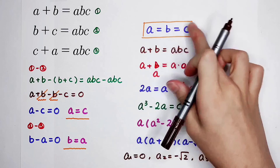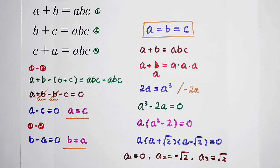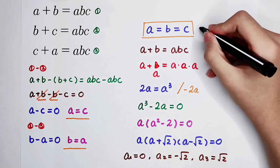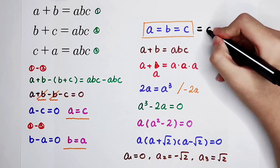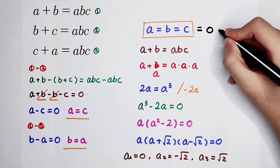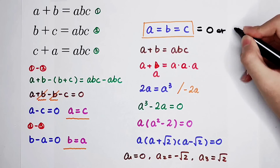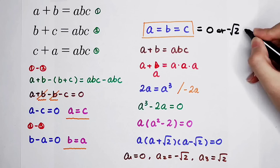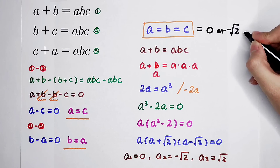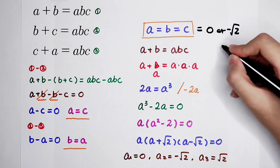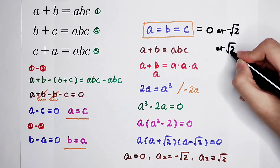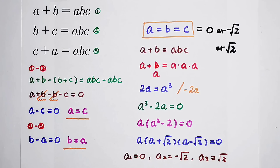Our answer is: A equals B equals C equals 0, or negative square root of 2, or square root of 2. Give me a thumbs up, subscribe to my channel, ring the bell for more videos, and we'll see you next time. Bye-bye.